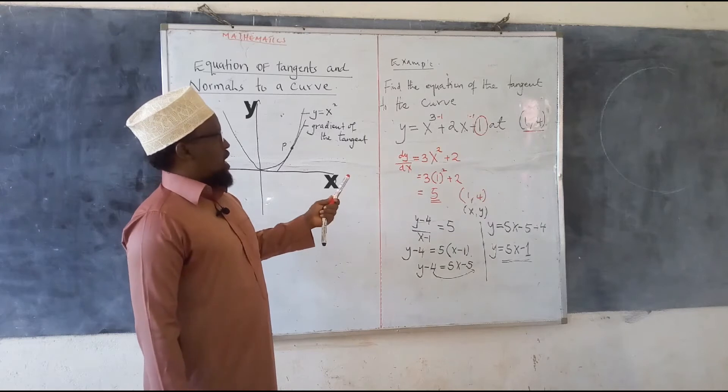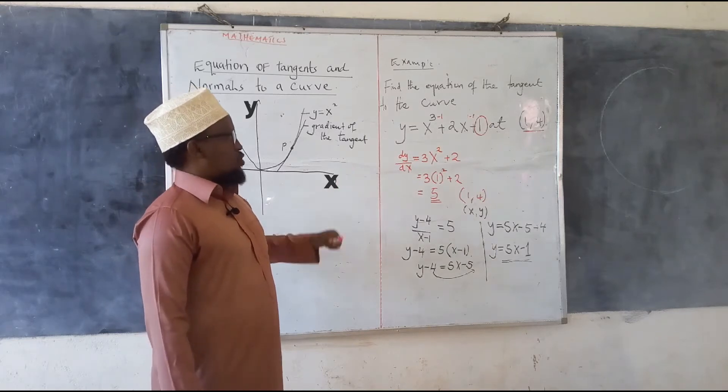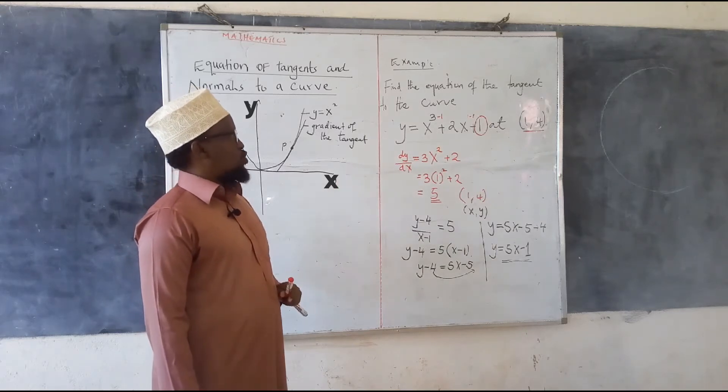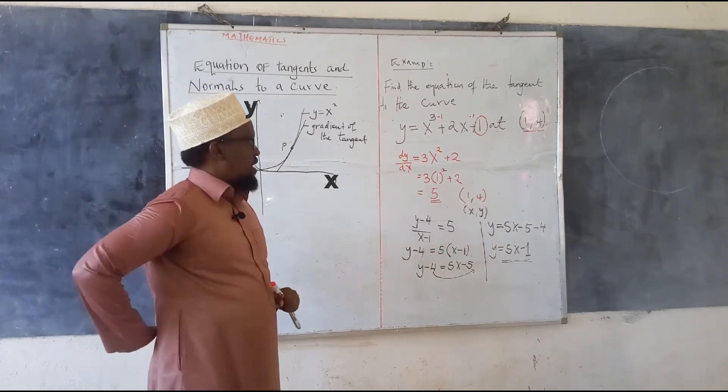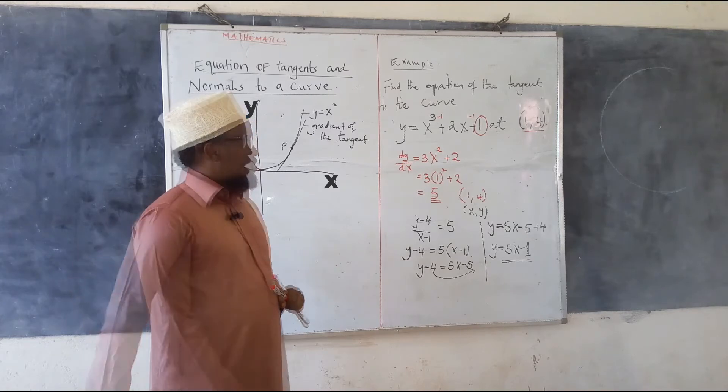Once we have seen how to find the equation of the tangent, we can now find the equation of the normal to the curve.